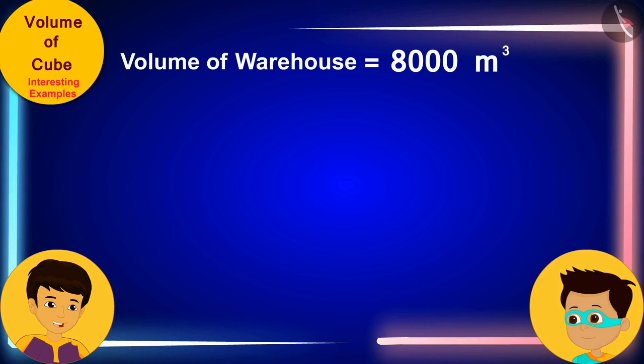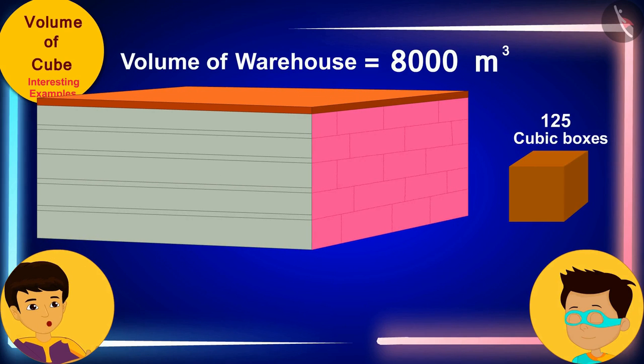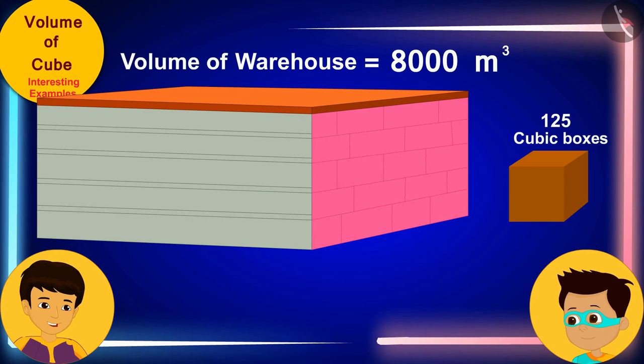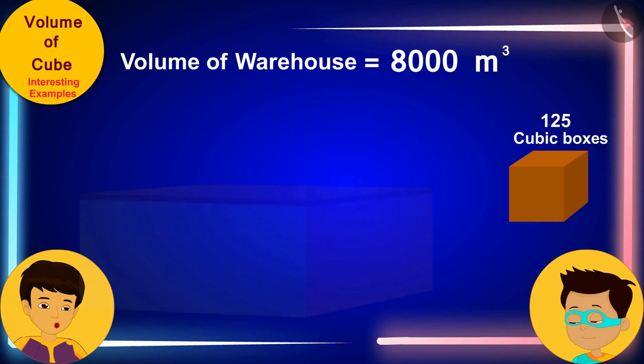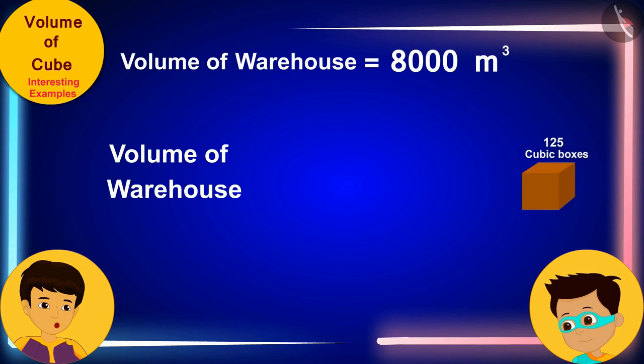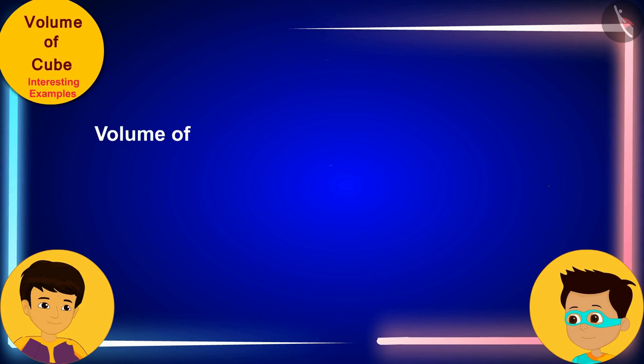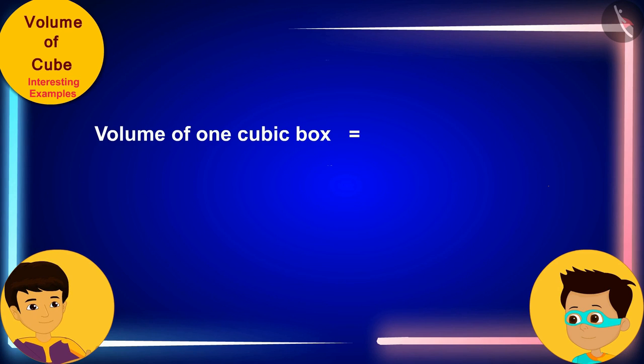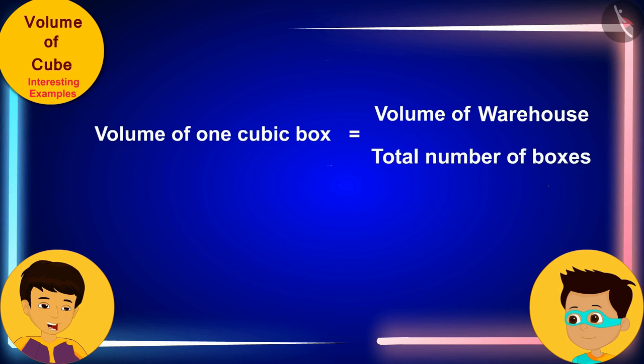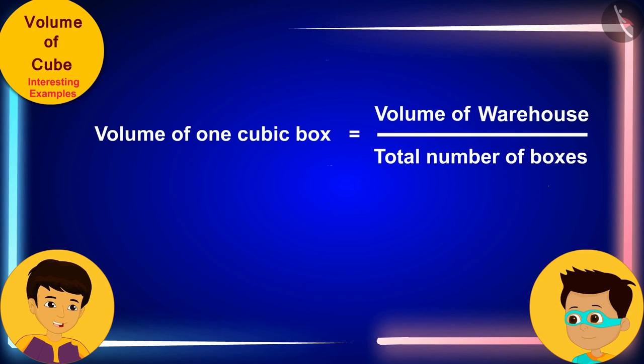Yes! Your father has to keep 125 cubic boxes in this warehouse. And like I told you earlier, the volume of this warehouse is equal to the total volume of all these cubic boxes. Therefore, to find the volume of a cubic box, we only have to divide the volume of the warehouse by 125.